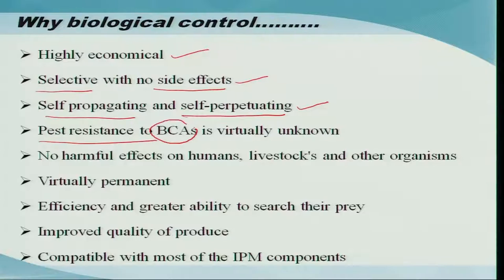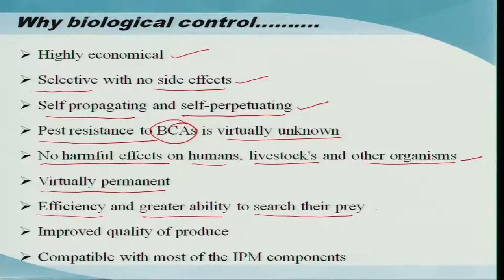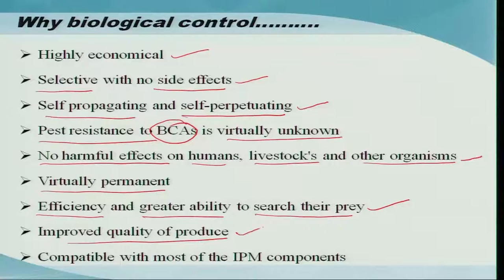Pest resistance to biological control agents is virtually unknown - there is no problem unlike in chemical means of management, where insects are known to develop resistance. There are absolutely no reports except in some pathogens. There are no harmful effects on humans, livestock, and other organisms - non-target organisms are quite safe. They are virtually permanent, existing in that habitat, and there is greater ability to search their prey. Biocontrol agents like predators and parasitoids can go in search of prey and control them, resulting in improved quality of produce with no residual toxicity. They are also quite compatible with most IPM components.